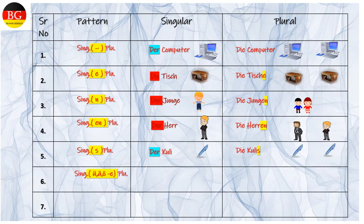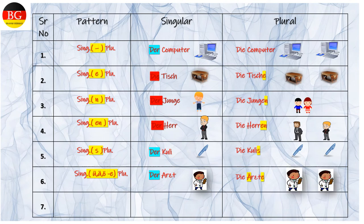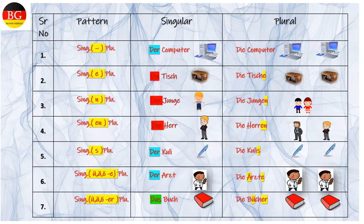Stem vowel getting changed and ending ER is getting added. Zum Beispiel: der Arzt, die Ärzte. Stem vowel change, ending ER getting added. Zum Beispiel: das Buch, die Bücher.